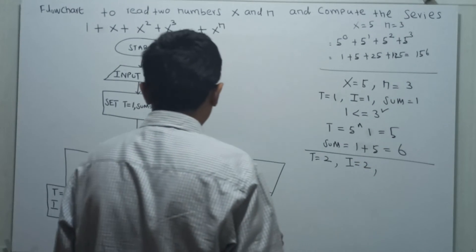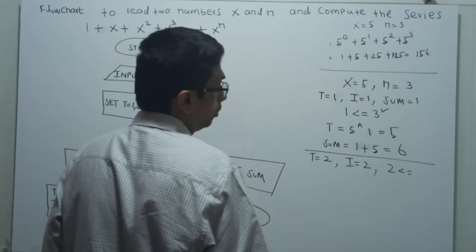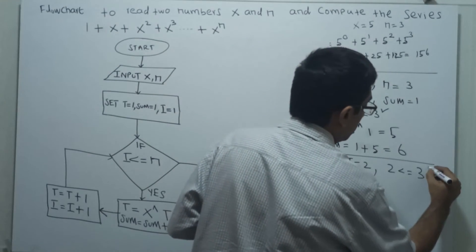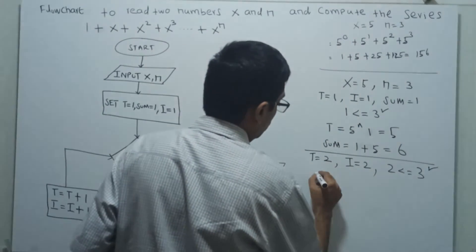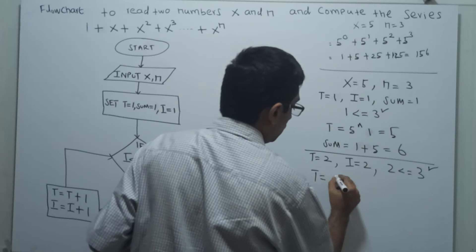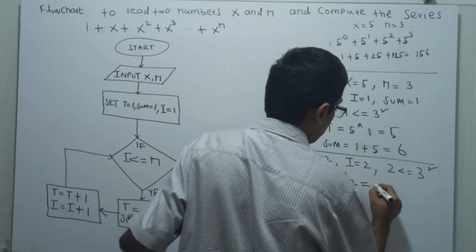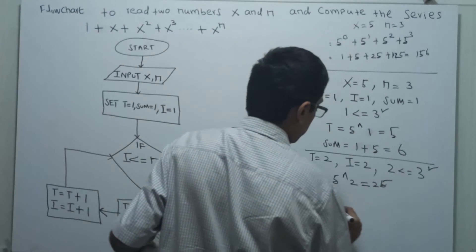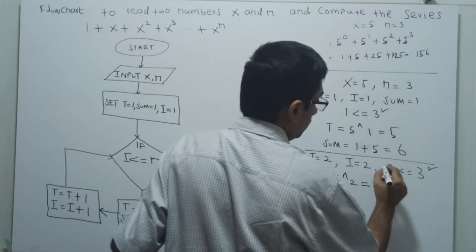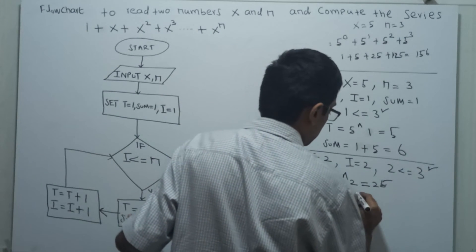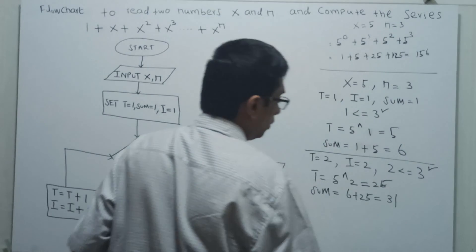Checking the condition: i less than or equal to n, that means 2 less than or equal to 3 — this condition is also true. So t equal to x power t, that is 5 to the power 2, which is equal to 25. Sum equal to existing sum 6 plus 25, which is equal to 31. Second iteration complete.